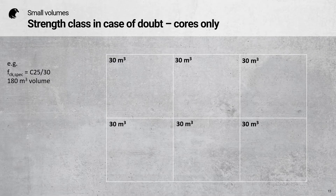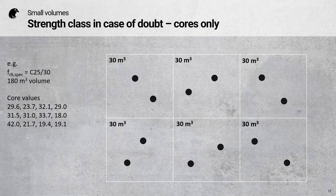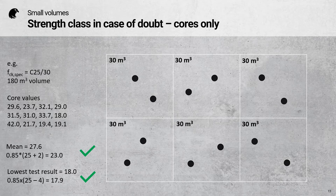Let's look at an example. I have a specified characteristic strength of C25/30 and a 180 cubic metre volume. My first job is to divide this test region into six smaller test regions of 30 cubic metres. I take two cores in each, then calculate the mean and do the simple calculation to see if it satisfies the criteria — in this case it does. I also check the lowest test result against its criterion. If both are satisfied, I can confirm that this concrete is C25/30.